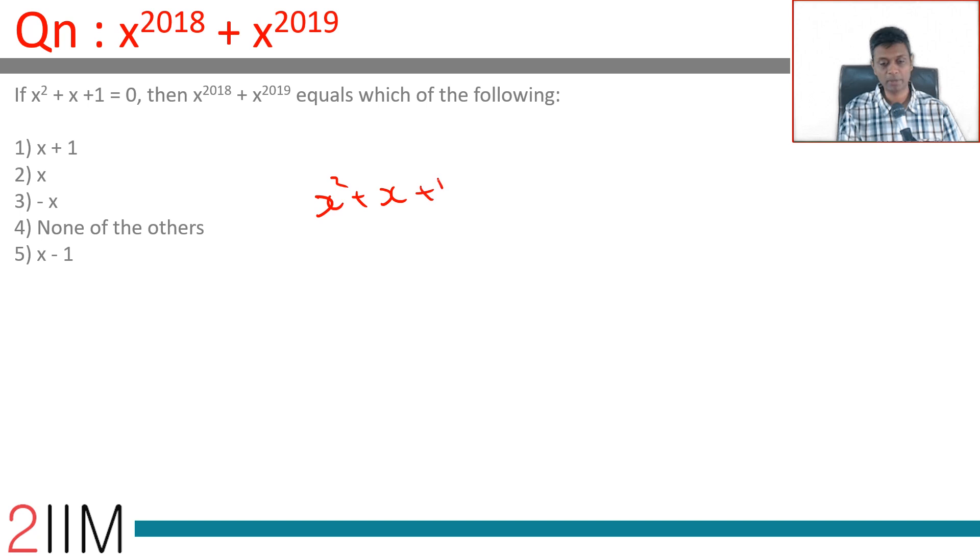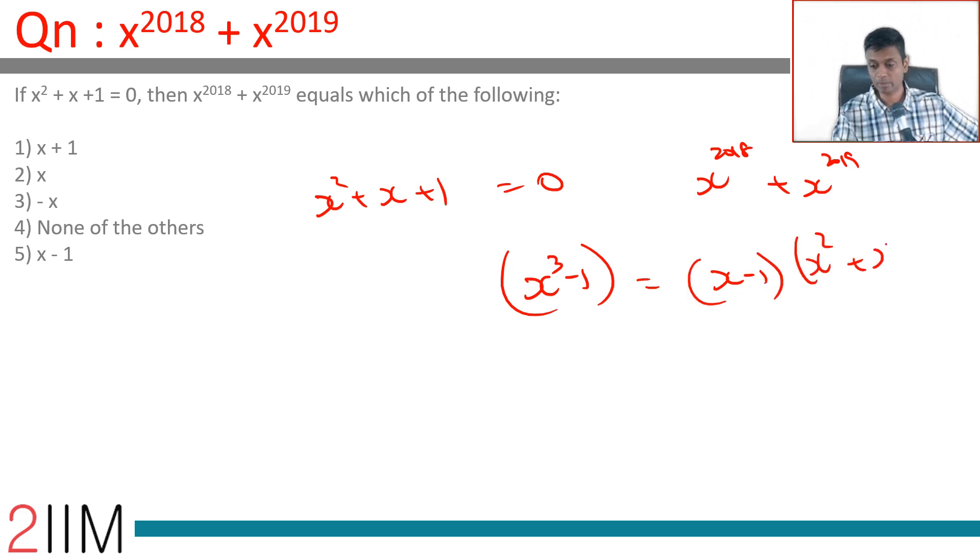x² + x + 1 = 0. Find x^2018 + x^2019. It's very useful to know that x³ - 1 equals (x - 1)(x² + x + 1). This is very similar to...